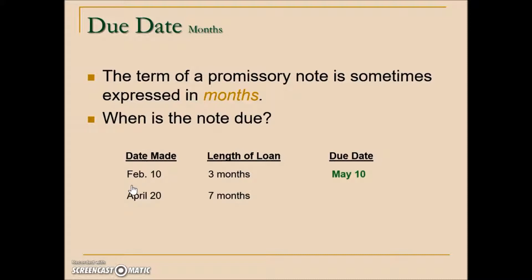If we have April 20th with seven months, we don't need to go to our days-of-the-year table — simply move seven months from April, which puts us at November 20th. For October 18th with nine months, this goes into the next year because October, November, December is only two months; we have seven more to go. Starting with January, the seventh month puts us at July 18th.